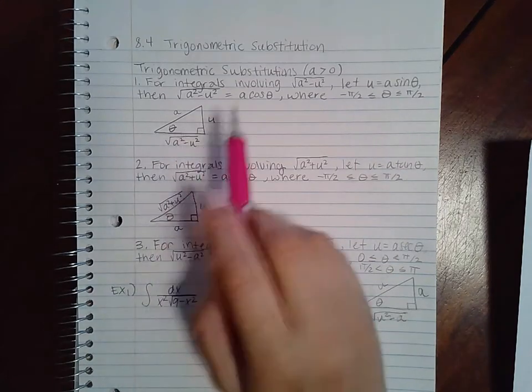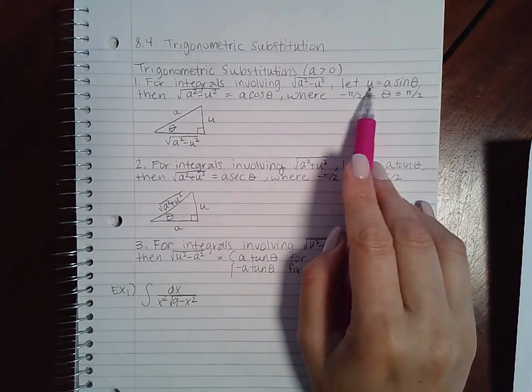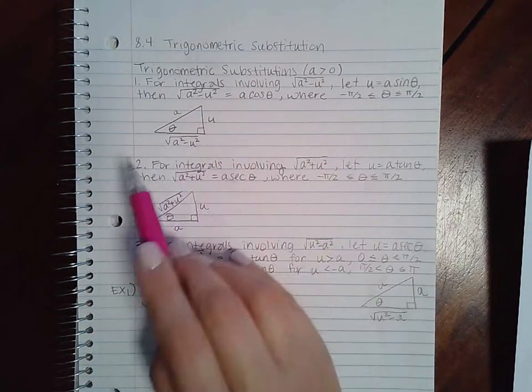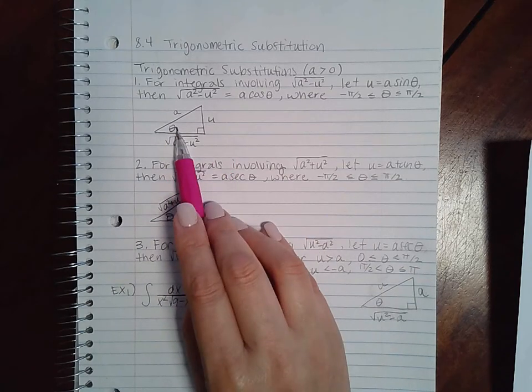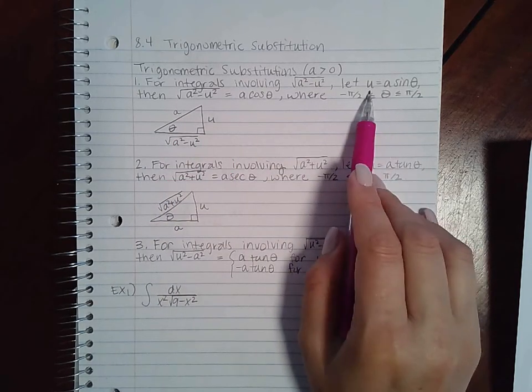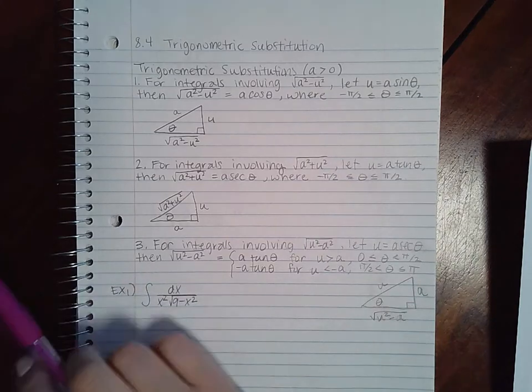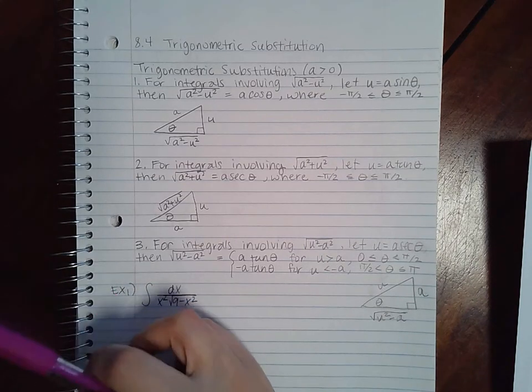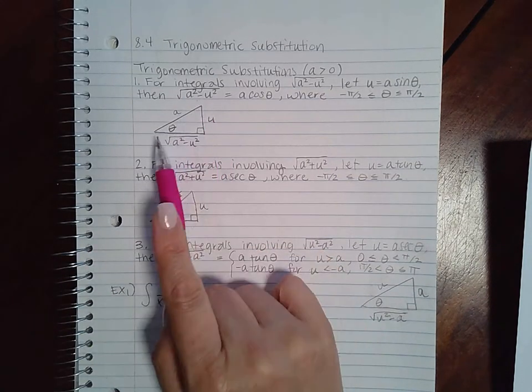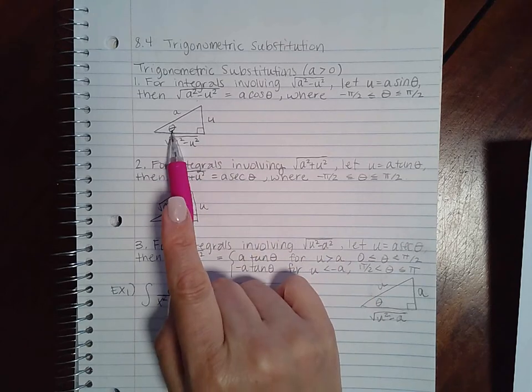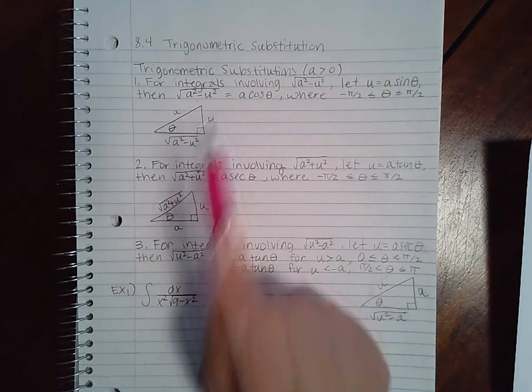It gives you the triangles just so you can see where everything is coming from. If you're doing an integral like this, you're letting u equal a sine theta, so you have opposite over hypotenuse. This would be the same thing as adjacent over hypotenuse, which is cosine.